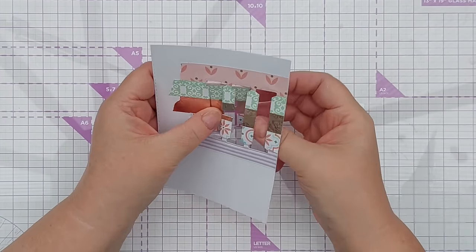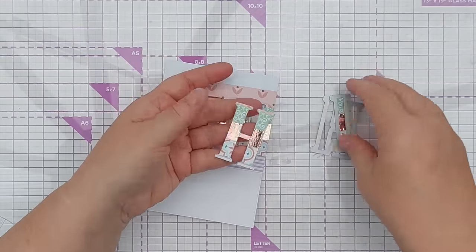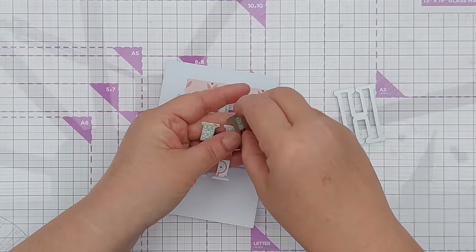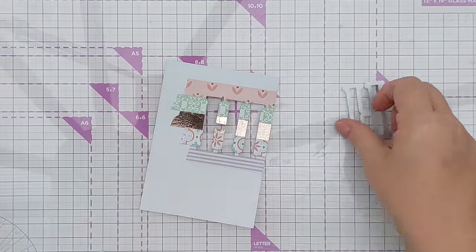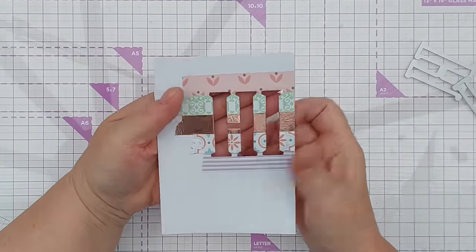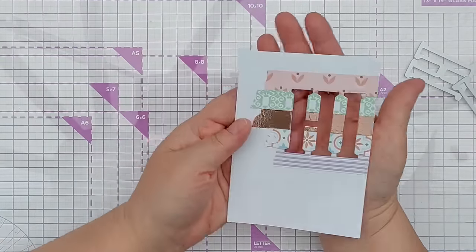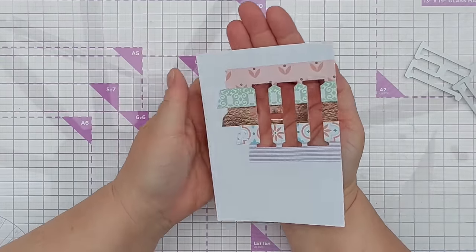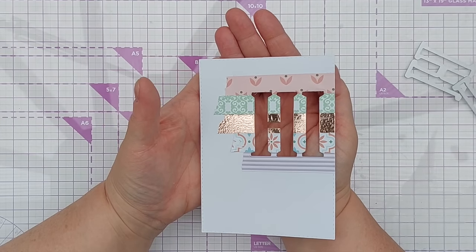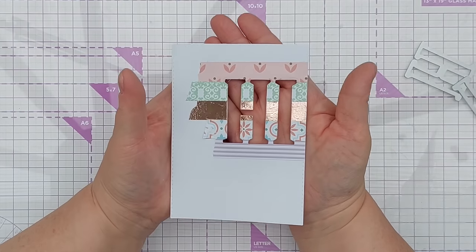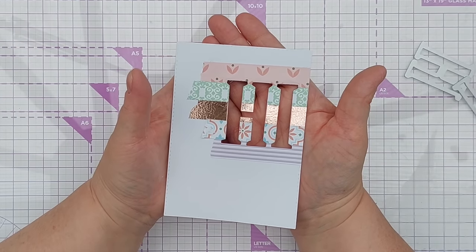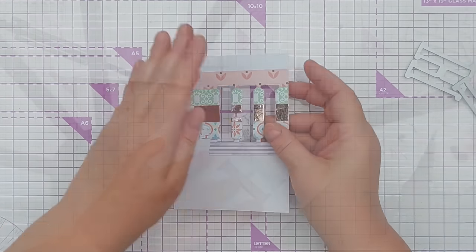You can carefully pop your letters out, you can keep those, you could use those on another card. But now you've got a rather nice aperture there. You could do what you like with that, you could just back it with some plain white card, you could back it with a solid colored card, you could make a shaker out of it. The world's your oyster really.